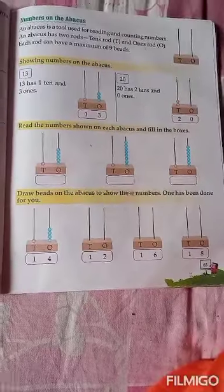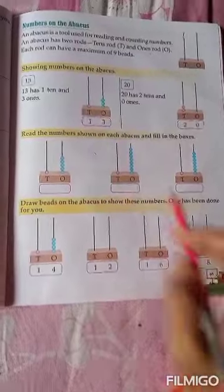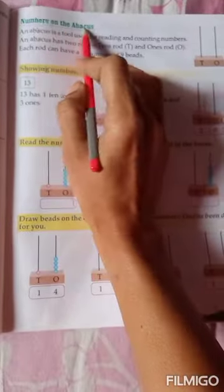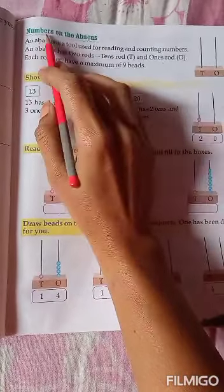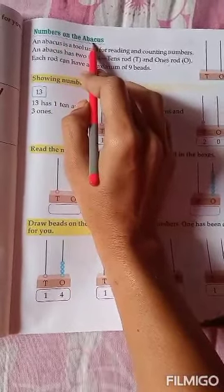So children, let's start with book work, page 65. Numbers on the abacus. Numbers on the abacus means, I explained you just now, numbers at abacus.